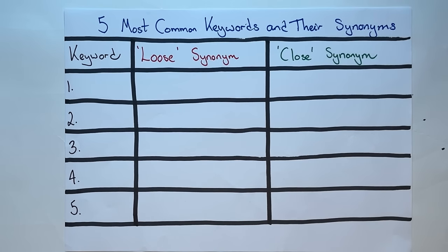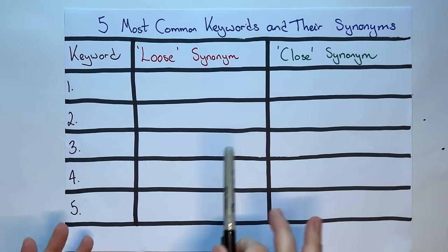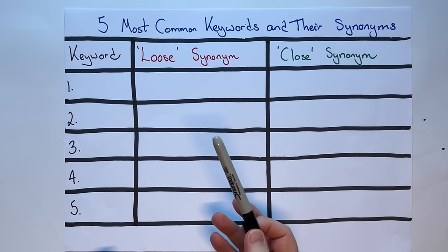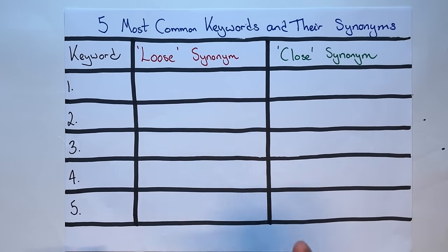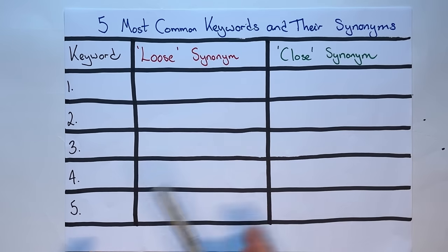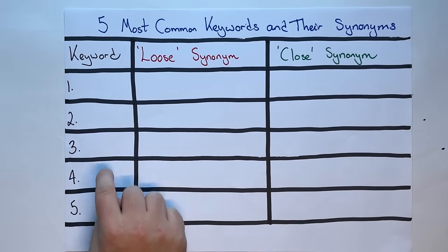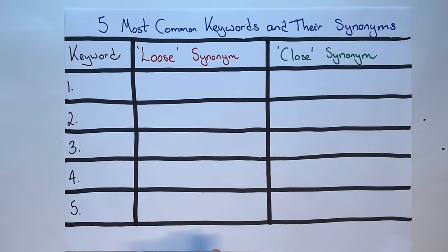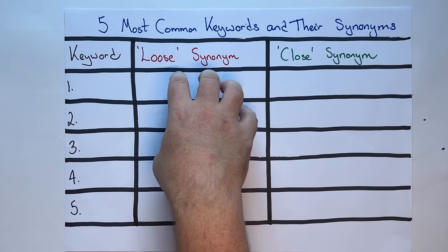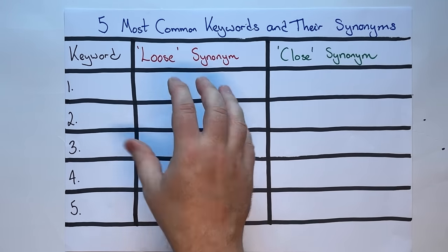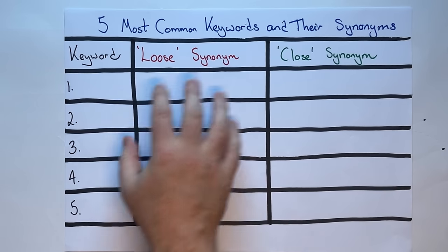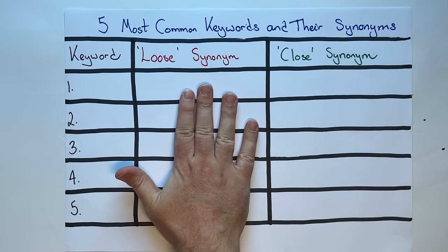Hi everyone, Chris here from IELTS Advantage. In this video, we're going to look at the five most common keywords that you'll find in IELTS writing and, more importantly, what are their synonyms? We're going to reveal these five most common words and then tell you what loose synonyms are — synonyms that don't really mean the same thing as the keywords, and which you do not want to use.